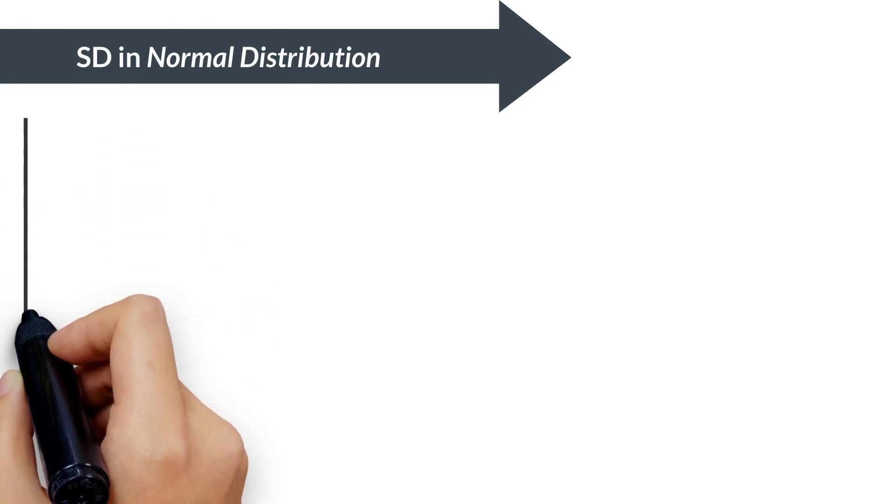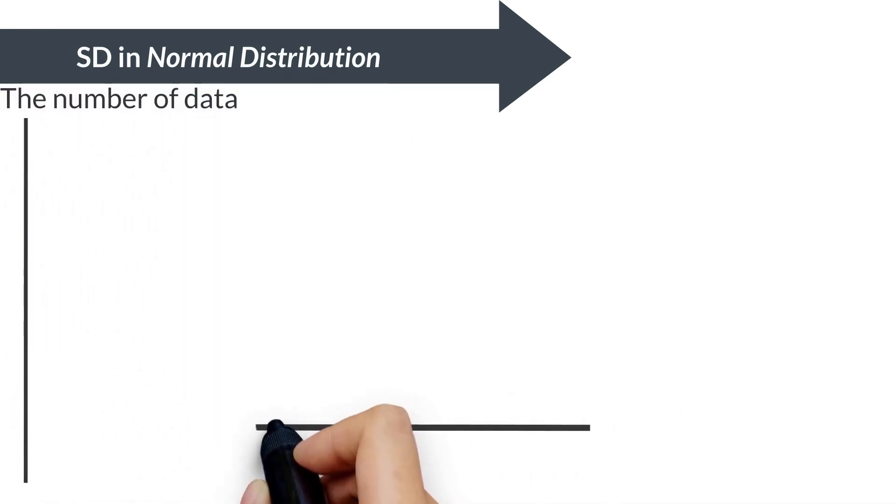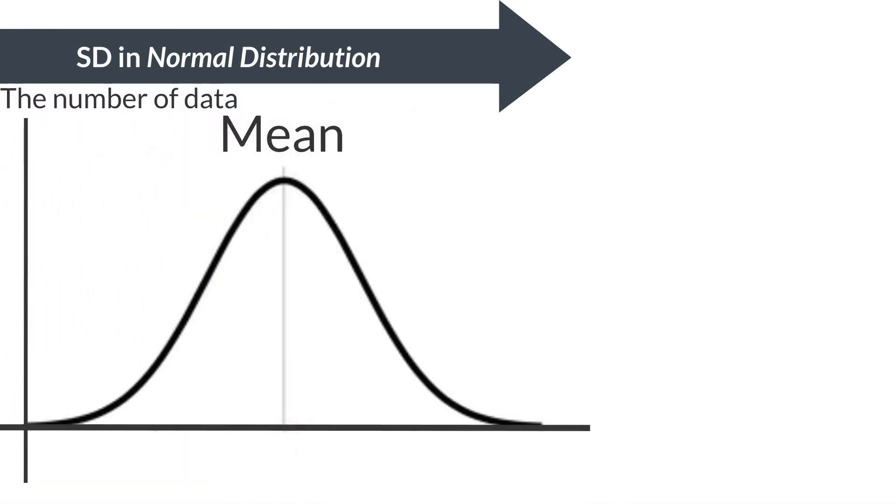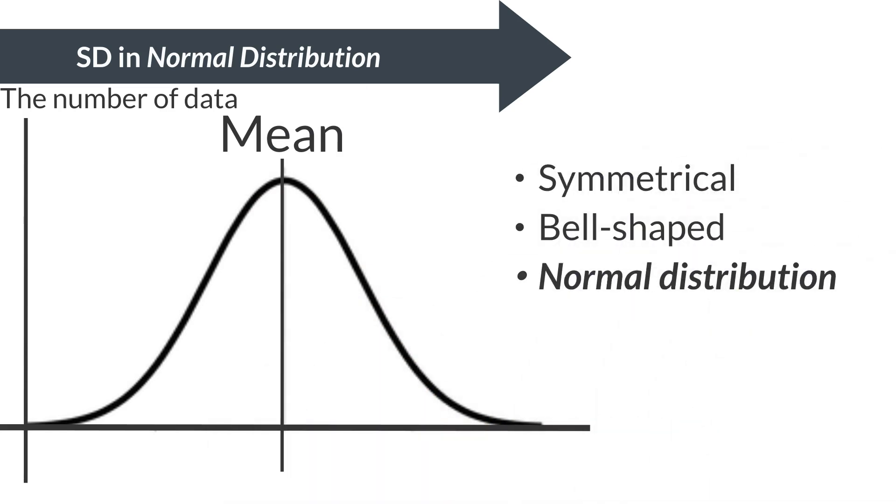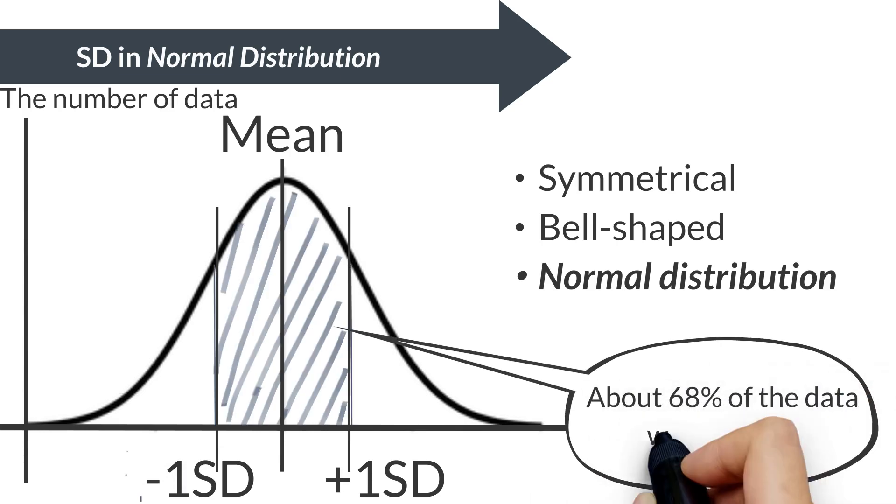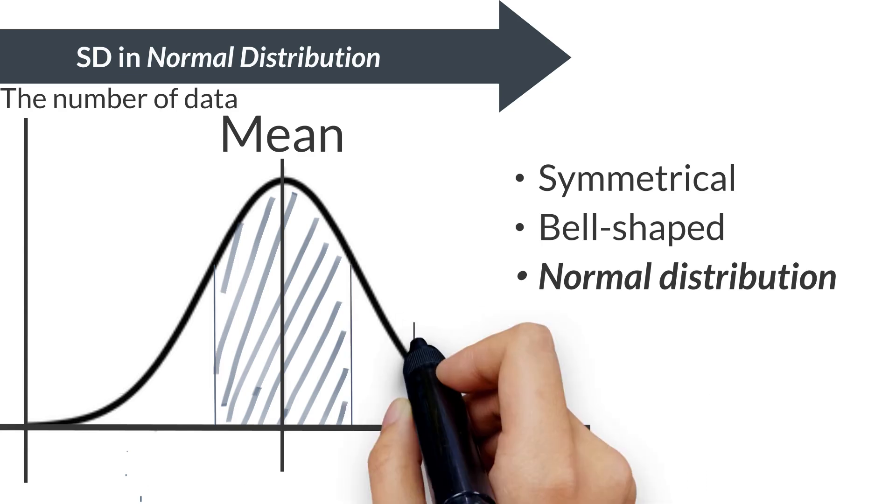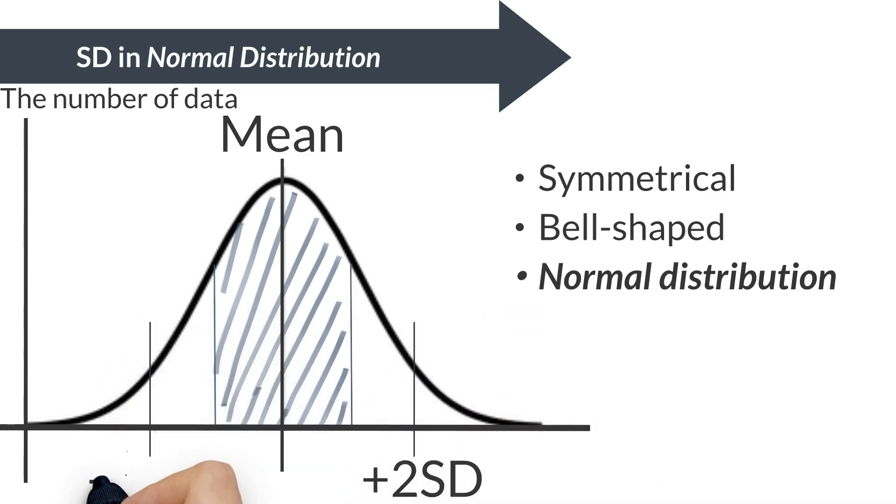Another benefit of standard deviation is its compatibility with normally distributed data. Normal distribution is symmetrical and bell-shaped, common in data like heights or test scores. In such distributions, about 68% of data lies within plus or minus 1 standard deviation (SD). About 95% within plus or minus 2 SDs.